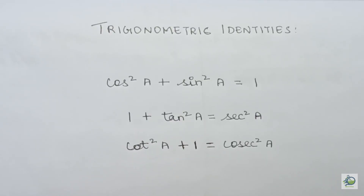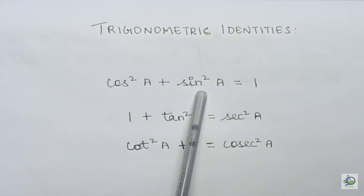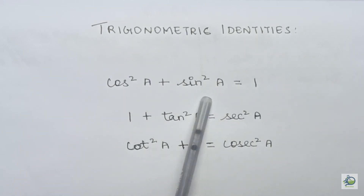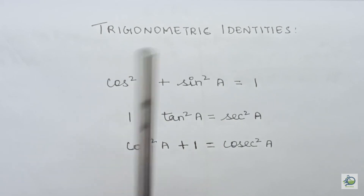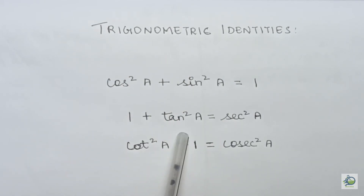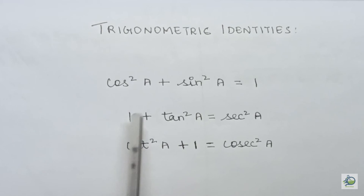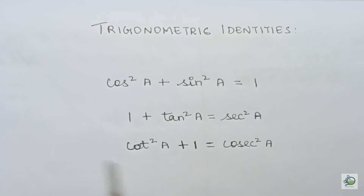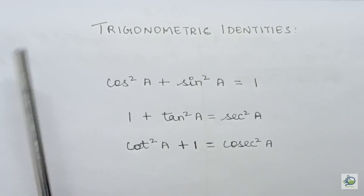Trigonometric identities. We need these three identities to solve exercise 8.4. First: cos²θ + sin²θ = 1. Second: 1 + tan²A = sec²A. Third: cot²A + 1 = cosec²A. These three formulas are very important for solving exercise 8.4.